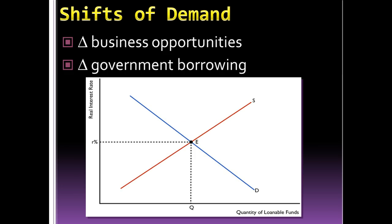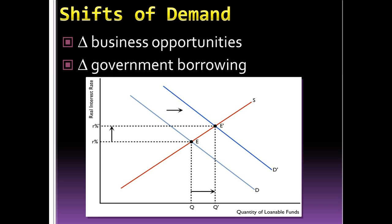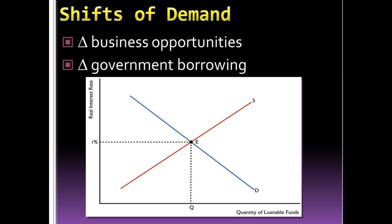In the loanable funds market, demand shifts when there's a change in business opportunities or when the government is borrowing more or less. If business opportunities improve or the government borrows more, demand shifts to the right — an improving economy means a greater expected rate of return tomorrow, making it worthwhile to borrow now. If there's a downturn in business opportunities or the government borrows less, demand shifts left and the overall interest rate drops.